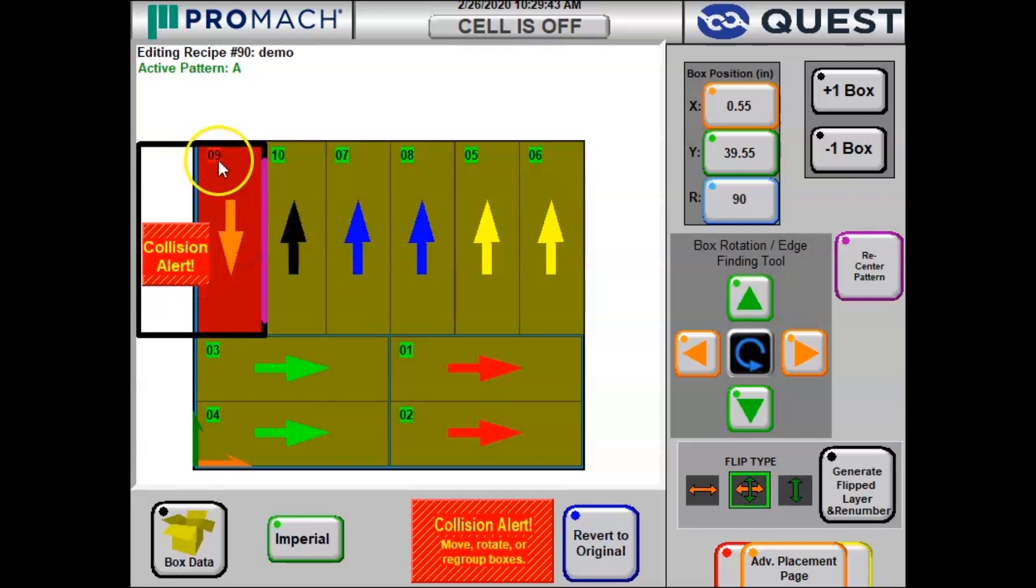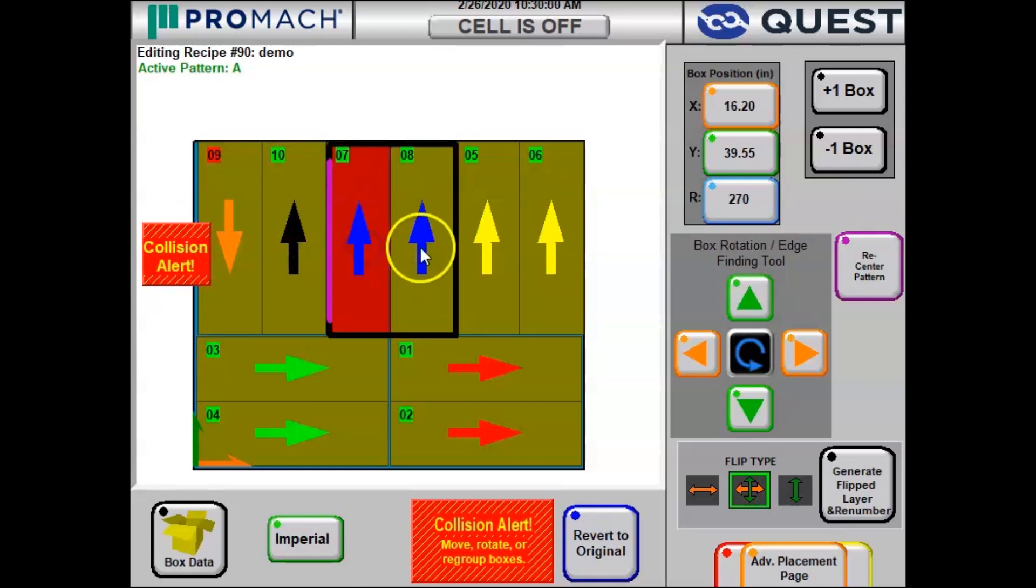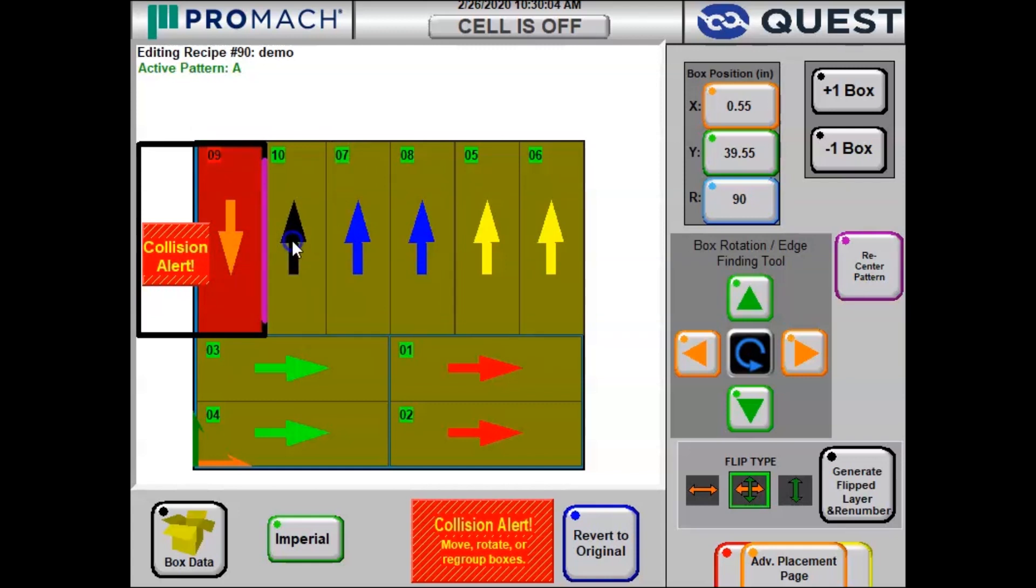But now we have a problem because this black box represents the robot's gripper and we have an empty half of the gripper overhanging the side of the pallet. So what we want to do here is get boxes 9 and 10 grouped together like these other boxes are, so that the robot will pick two boxes at the same time and drop them at the same time. And to do that, we want to go to our Flip and Swap page.